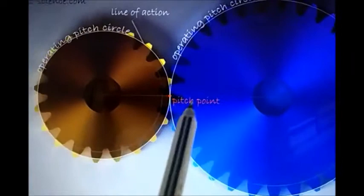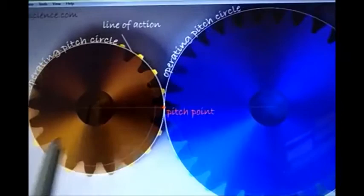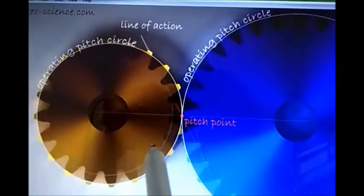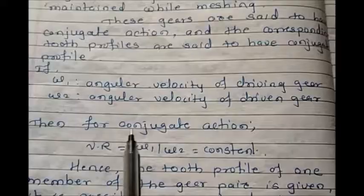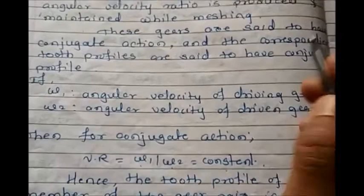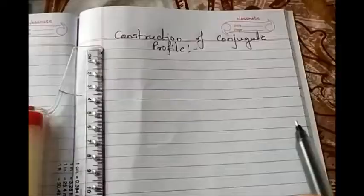Rotary motion is produced when two gears are meshed with each other and one gear, i.e. the driver, transmits the power to the driven gear. This tooth profile is designed in such a way that a constant angular velocity ratio is maintained while meshing. So when a gear pair maintains a constant angular velocity ratio at a particular instant, such a gear pair is known as conjugate gears and is said to have a conjugate profile. Now let's start the construction of conjugate profile.